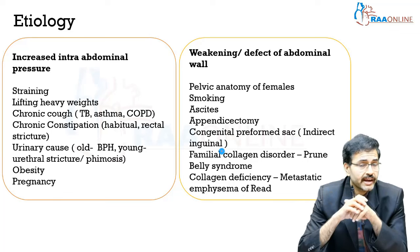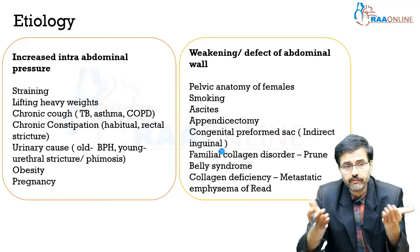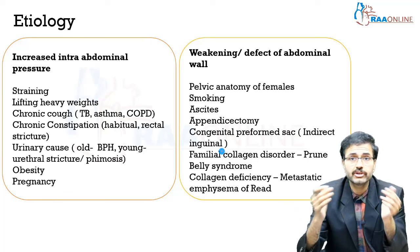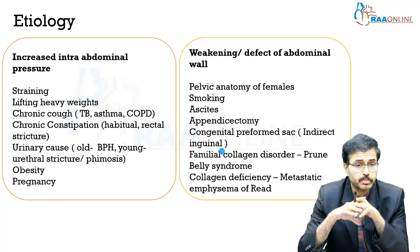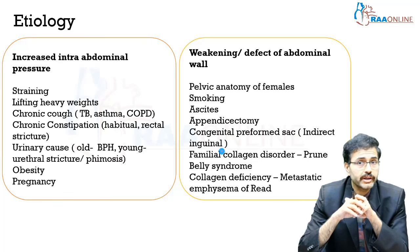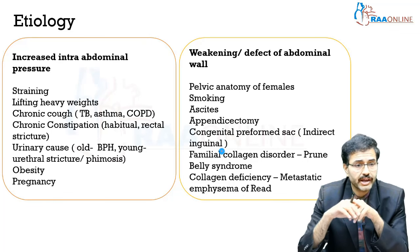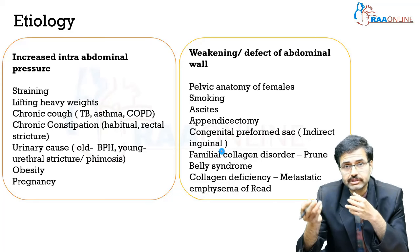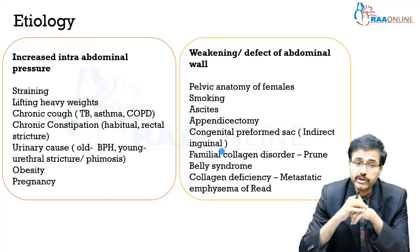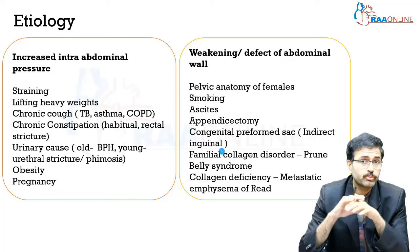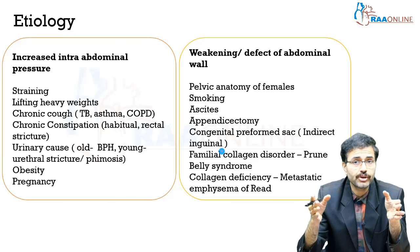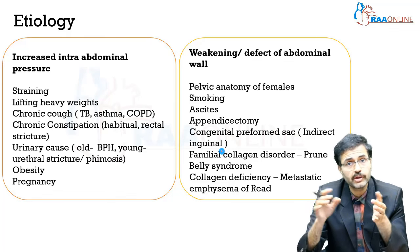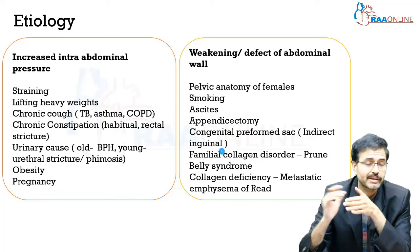Increased intra-abdominal pressure can occur because of lifting heavy weights, chronic cough as in the case of a patient with COPD or asthma, chronic constipation — either habitual constipation or a rectal stricture. Urinary causes, especially in elderly individuals with benign prostatic hyperplasia, are also important contributing factors.